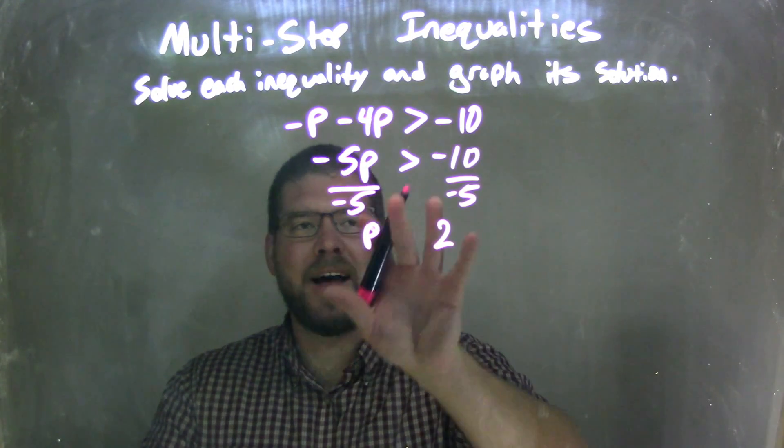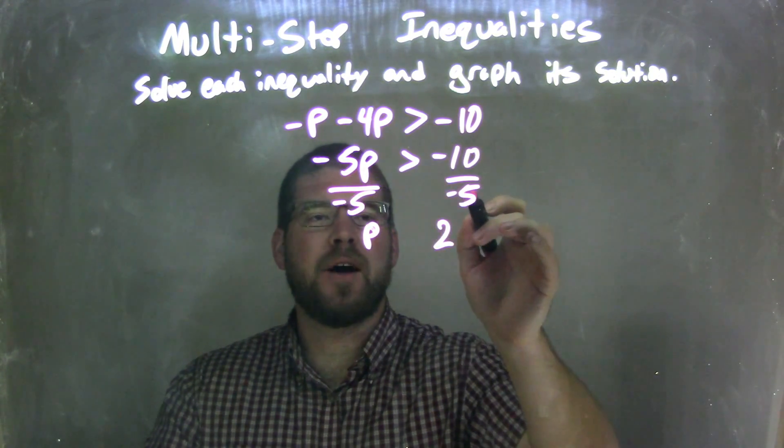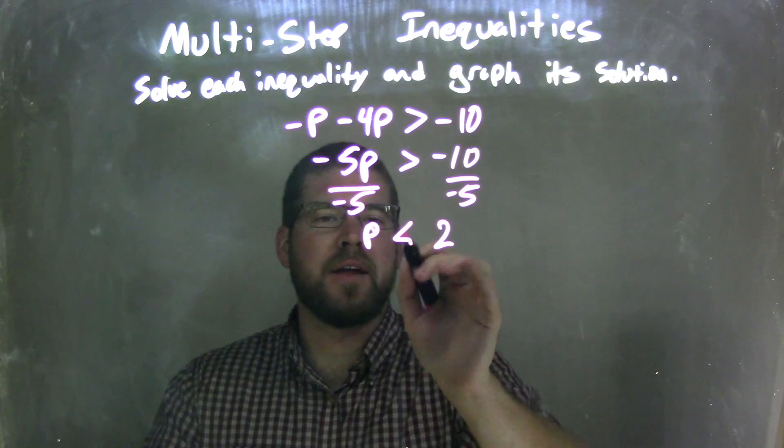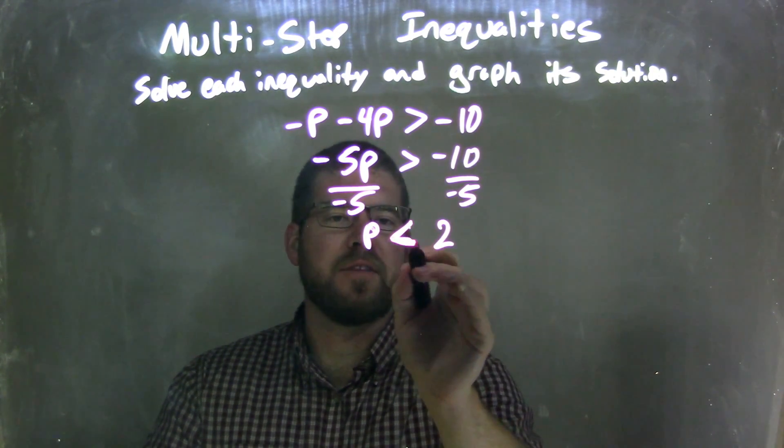Also important: when dividing by a negative over an inequality, we flip that inequality. So the greater than sign becomes the less than sign.